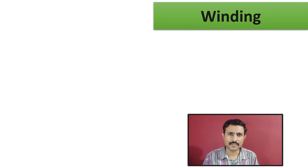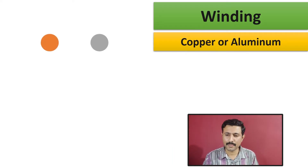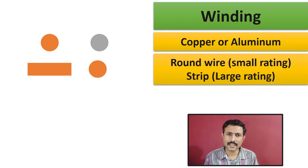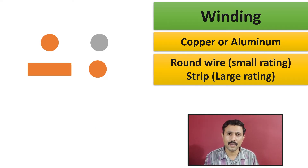The first component of transformer is winding, and this is the heart of transformer. This winding is either made up of copper material or aluminium material. Most of the time it is made up of copper material, but when cost is an important factor, aluminium can be chosen. In winding, either a round wire conductor is used or a strip conductor is used. When the rating of transformer is small, round wire conductors are used, and when the rating is larger and more current is going to flow, a copper strip is preferred.